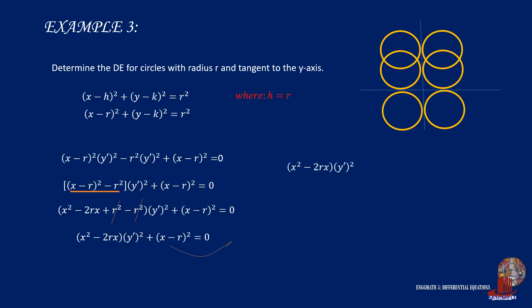Isolating y-prime squared by moving the other term to the right and dividing by the coefficient, and extracting the negative sign from the denominator to transform the denominator to 2rx minus x squared, the final differential equation is y-prime squared equals x minus r squared all over 2rx minus x squared.